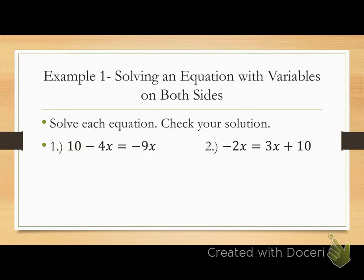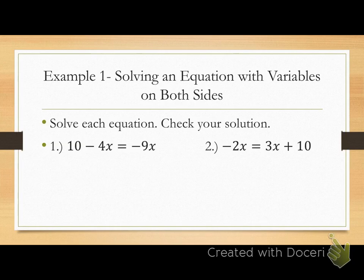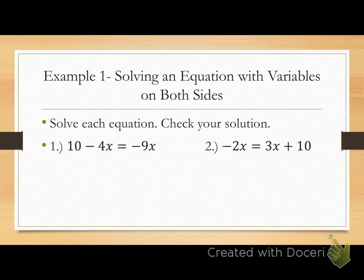Let's look at some examples. Solve each equation and check your solution. Problem: 10 minus 4x equals negative 9x. First step is to simplify one or both sides if necessary. On the left side, 10 minus 4x — no parentheses, no like terms to combine, so it's already simplified. The right side, negative 9x, is also already simplified. So we don't even need step one here.